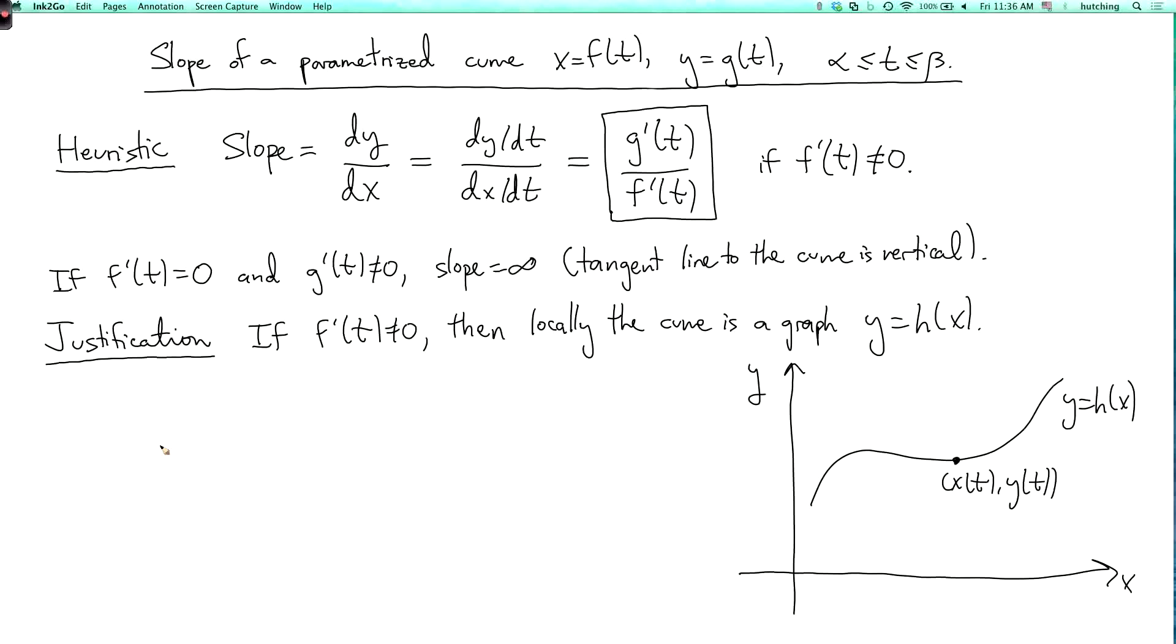So we can now use the chain rule. So I look at the equation y equals h of x. And since y is equal to g of t and x is equal to f of t, I can plug those in to write this as g of t equals h of f of t. And now I can use the chain rule. So I have g prime of t is h dx, so h is a function of x, times f prime of t. That's what the chain rule tells us.